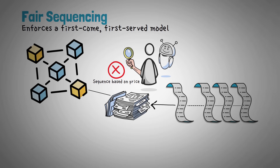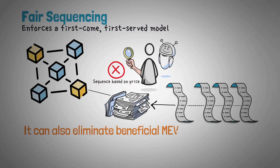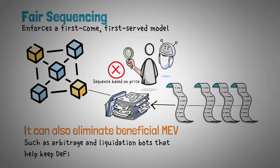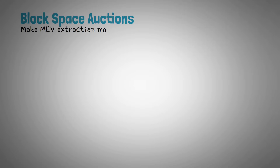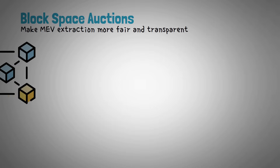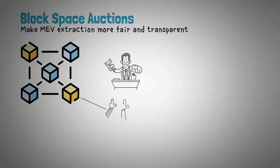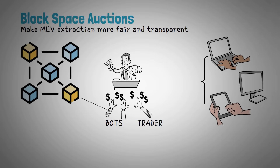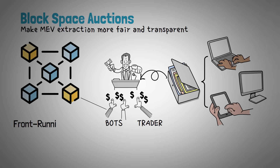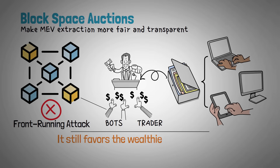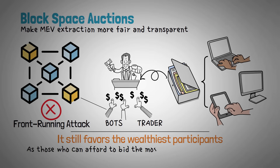A key criticism of fair sequencing is that while it does prevent harmful MEV, it also eliminates beneficial MEV, like arbitrage or liquidation bots that help keep DeFi markets efficient and stable. Another solution is block space auctions, which aim to make MEV extraction more fair and transparent. Instead of having validators privately manipulating transaction order for profit, these auctions allow traders and bots to openly bid for priority in a structured way. Users can bundle their transactions and submit them directly to validators, reducing harmful MEV tactics like front-running or sandwich attacks, while still enabling the good form of MEV. A criticism of block space auctions is that they may still favor the wealthiest participants, as those who can afford to bid the most will always secure priority, potentially reinforcing an unfair advantage in the system.